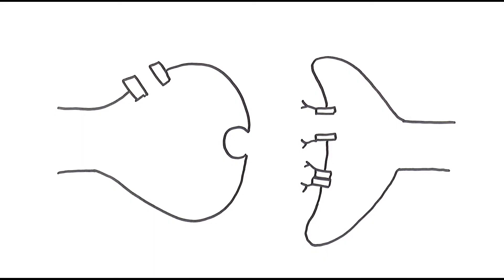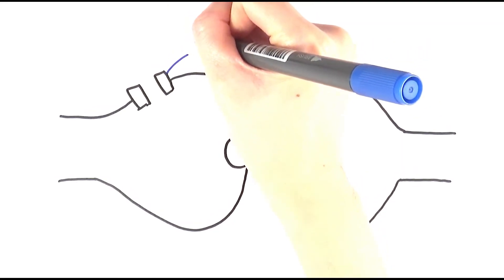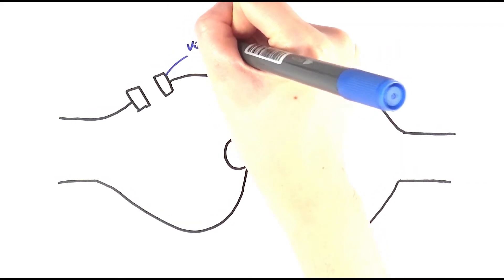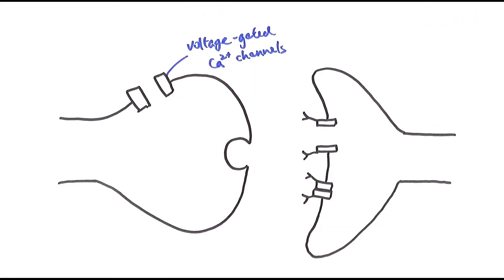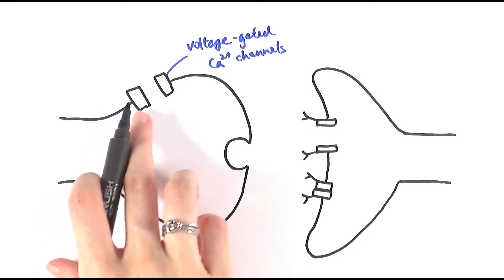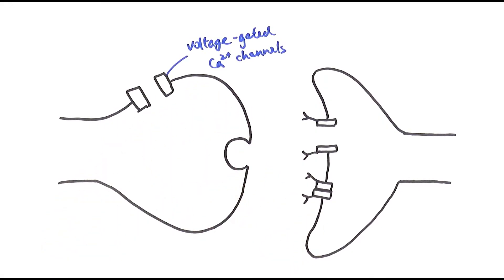On the pre-synaptic neuron there are a couple of structures worth knowing. First, we have what we call voltage-gated calcium ion channels. As the name implies, these calcium ion channels open or close depending on the state of polarization of the membrane. When the impulse comes in it depolarizes the membrane, and once it reaches the threshold these calcium ion channels open — very much like how voltage-gated sodium ion channels work in an action potential along the membrane.